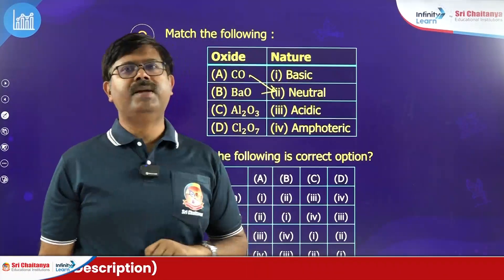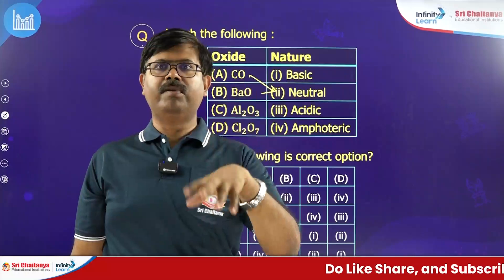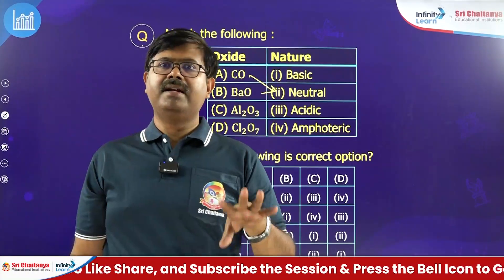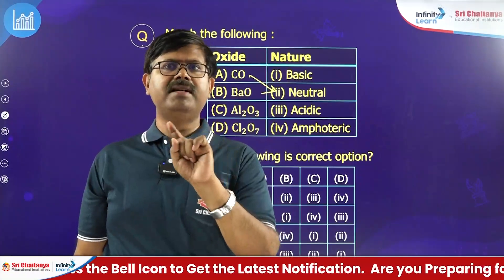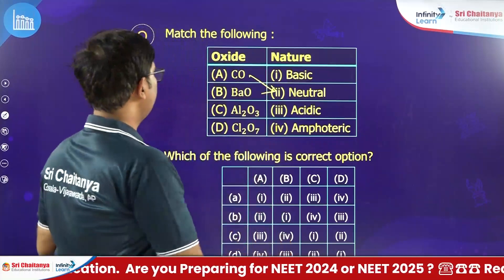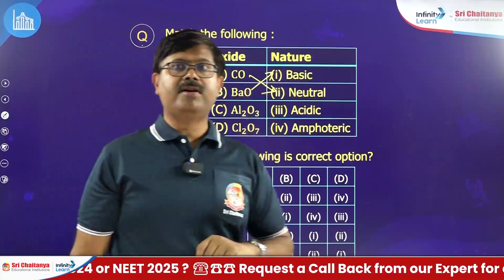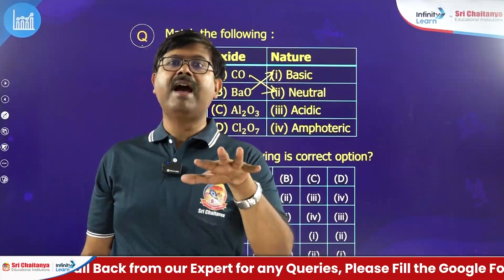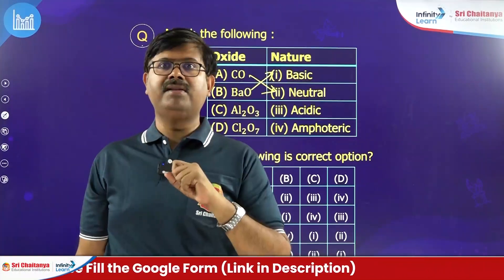Whereas barium oxide is an S-block oxide — group 1 and group 2 oxides. S-block oxides are basic in nature, except beryllium oxide which is amphoteric. All other S-block oxides are basic. Therefore barium oxide, being S-block, is basic in nature. Aluminium oxide, beryllium oxide, zinc oxide — these are all amphoteric in nature. Even tin and lead oxides are also amphoteric.